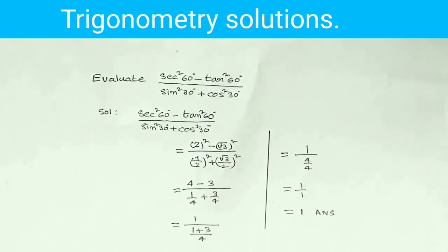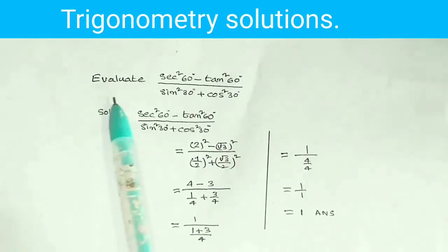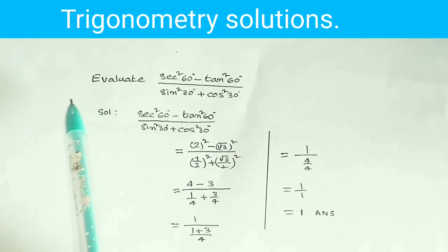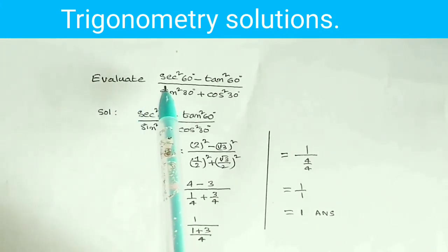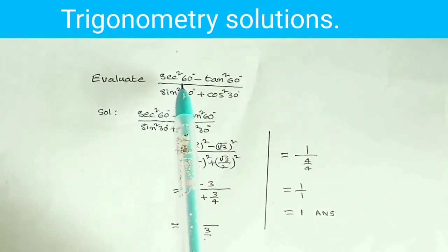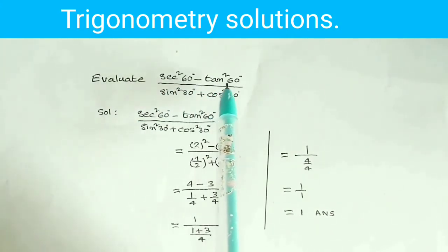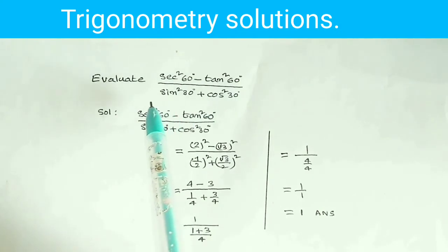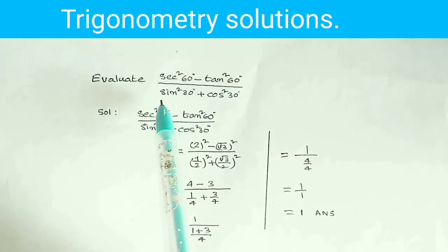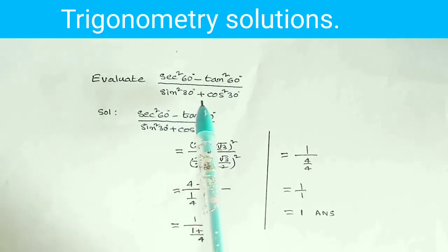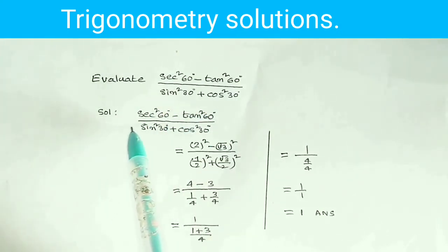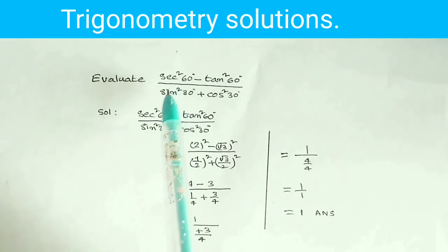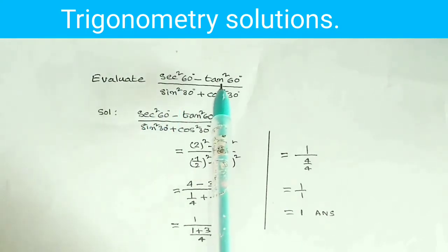Evaluate secant squared 60 degrees minus tan squared 60 degrees, over sin squared 30 degrees plus cos squared 30 degrees.